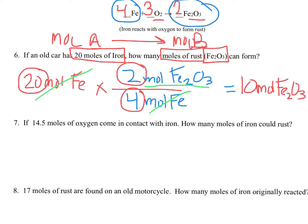Let's take a look at number 7. I've got 14.5 moles of oxygen come in contact with iron. Because of that, how many moles of iron could rust? So oxygen is what I'm starting with. It's my A, and I'm turning it into a new compound, which is B. So I'm going to go from moles of A to moles of B. Let's start with what I'm given.